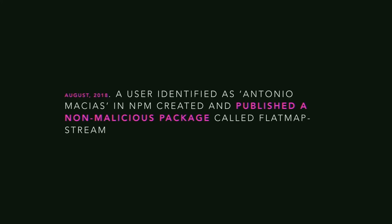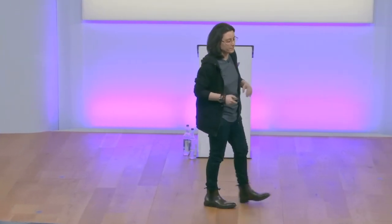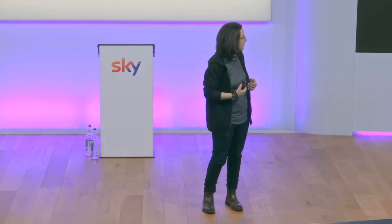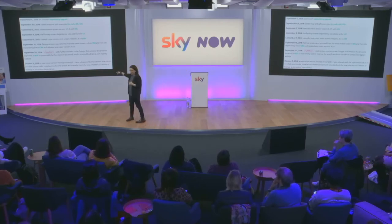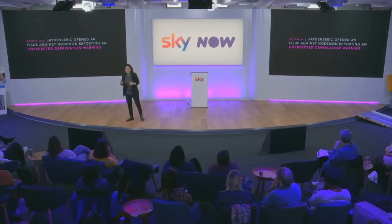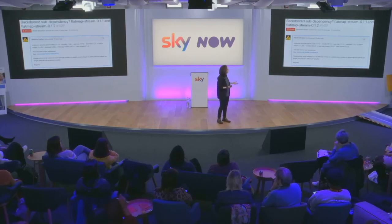In August 2018 a user called Antonio Macias published a non-malicious package, flat-map-stream. Then right9ctrl came in and told Dominic: 'Don't worry, I'll implement this package within the codebase — you don't need to do anything.' He continued the social engineering process, built trust, and Dominic gave him full npm publishing rights for the module. Right9ctrl then pushed cosmetic changes and at the end launched the attack.